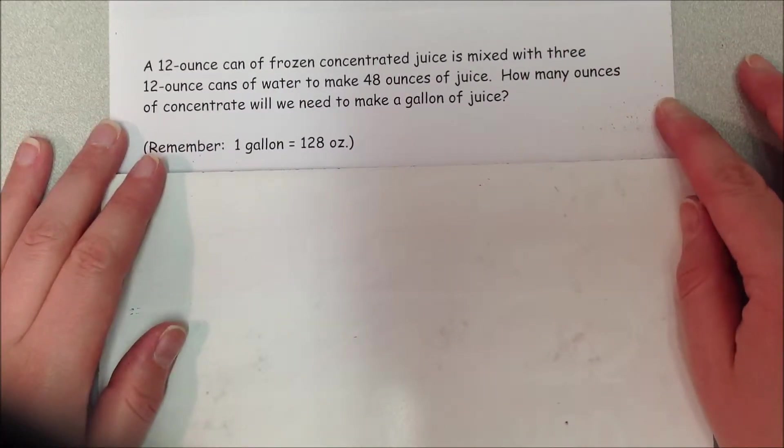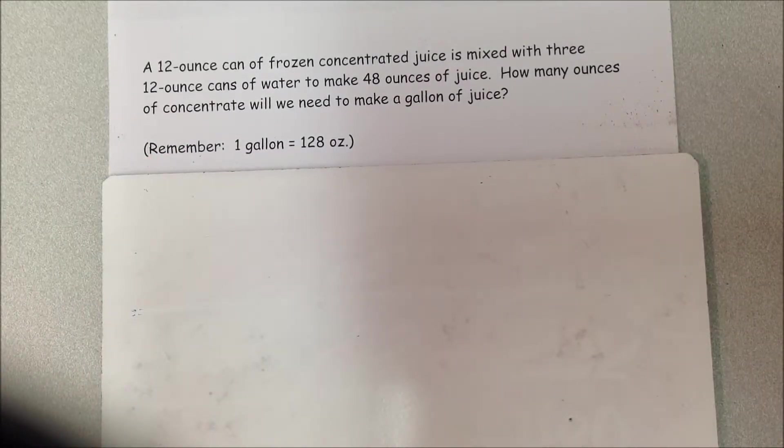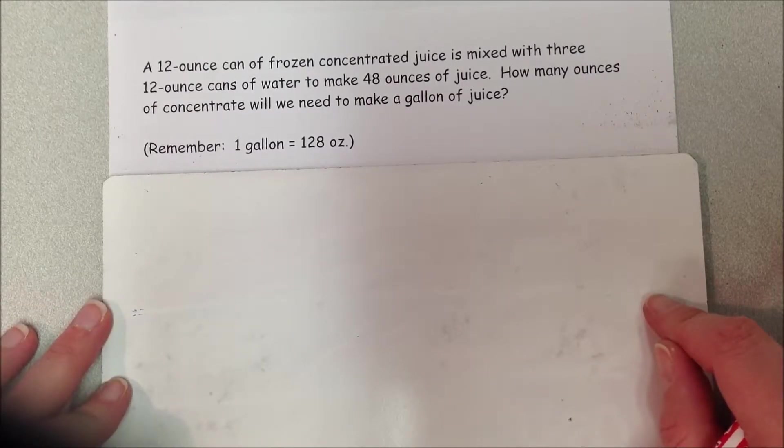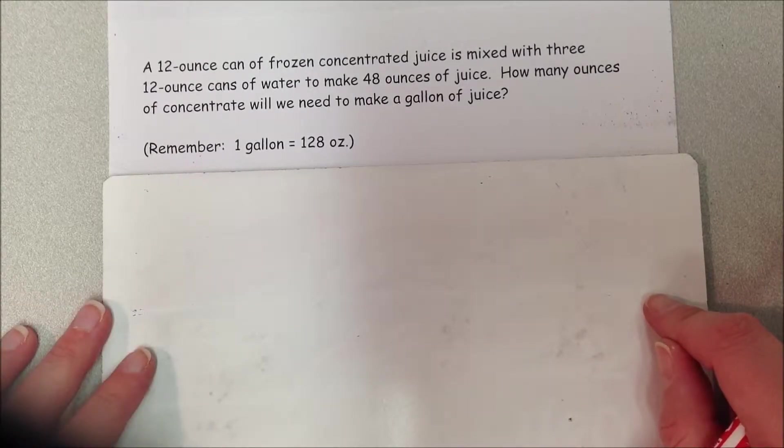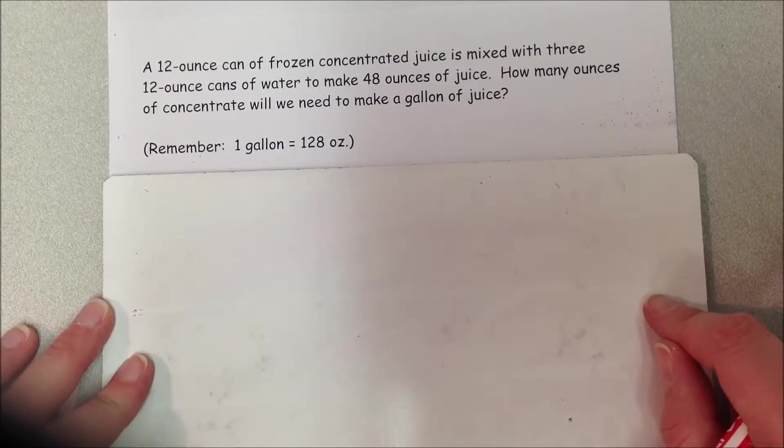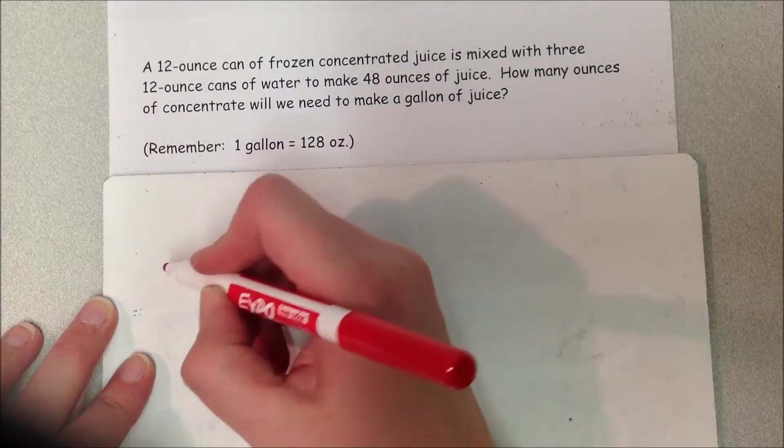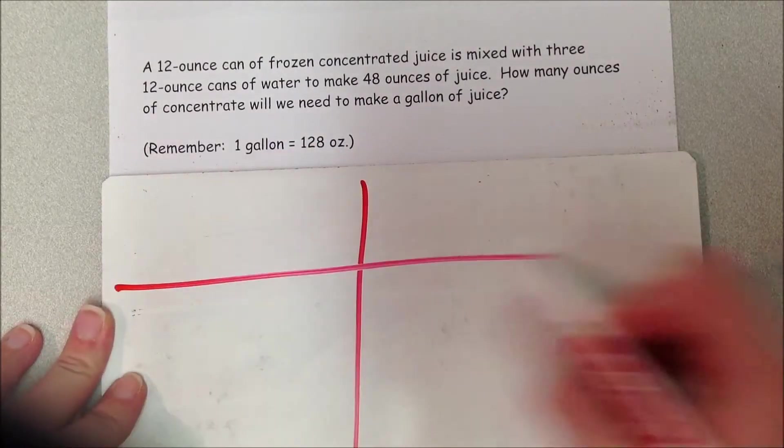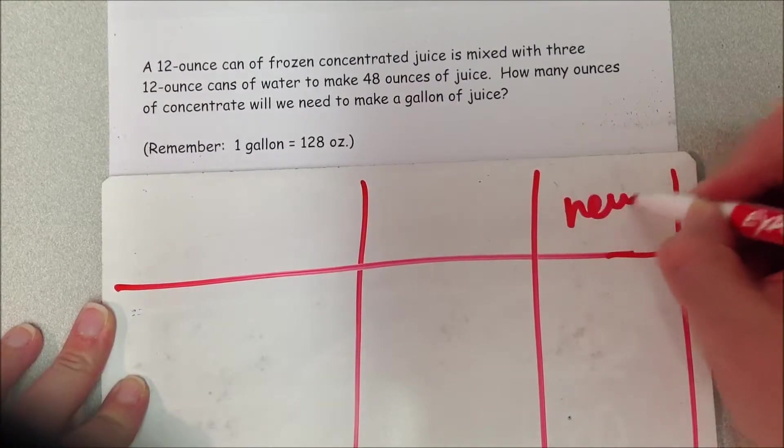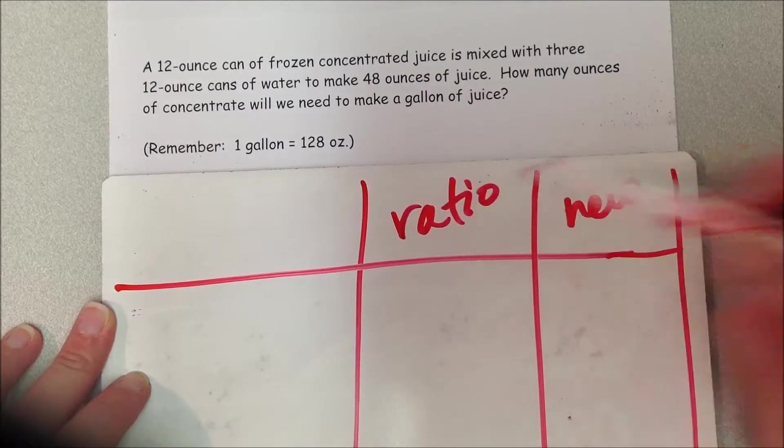A 12-ounce can of frozen concentrated juice is mixed with three 12-ounce cans of water to make 48 ounces of juice. How many ounces of concentrate will we need to make a gallon of juice? Holy buckets. What have they just told me? I've got to make my little chart here to keep myself organized and to keep from getting confused. I'm going to have my new amount, I'm going to have the ratio that they tell me about.